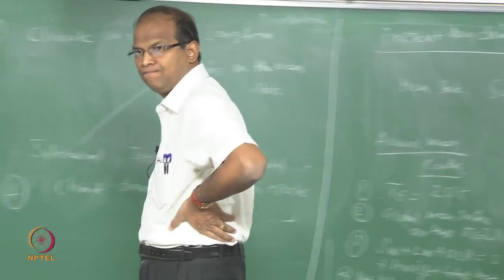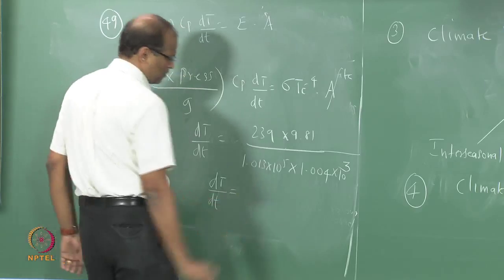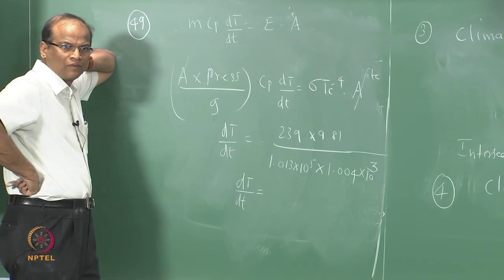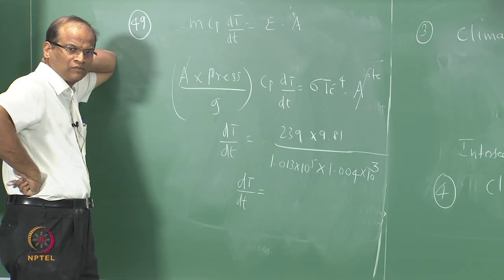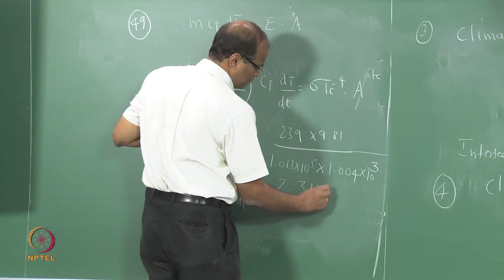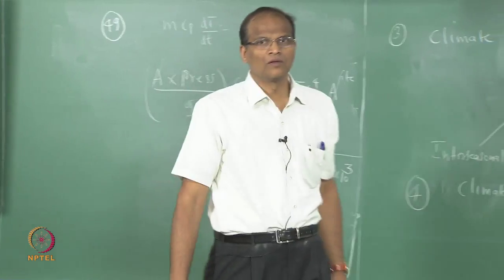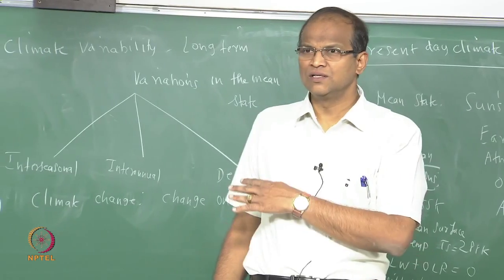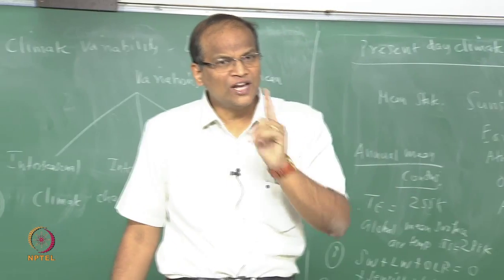It will be Kelvin per second. 1 hour is 3600 seconds; the night is 12 hours. So multiply by 3600 × 12 during the night to find the total cooling.